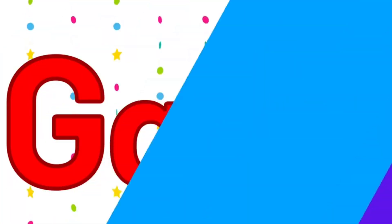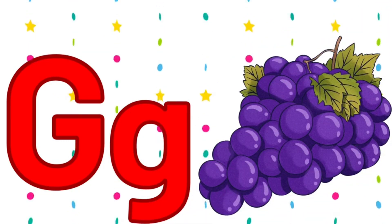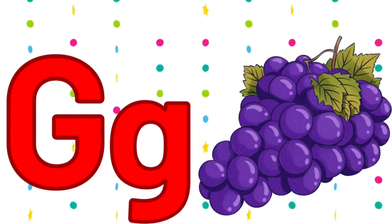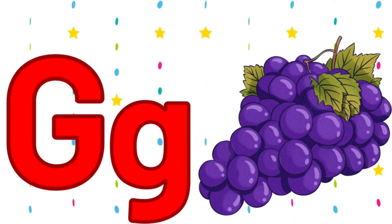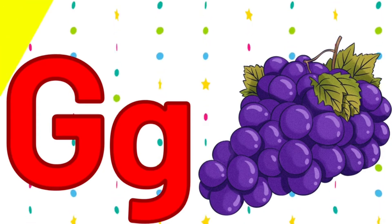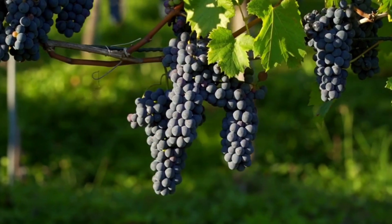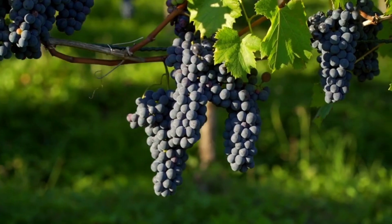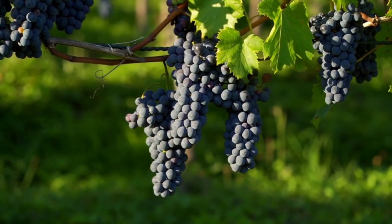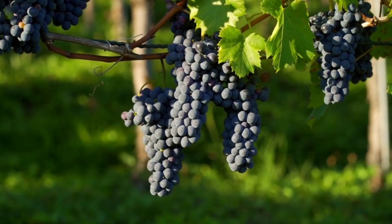G. G is for grape. Grapes mean angol. Its spelling is G-R-A-B-E-S.